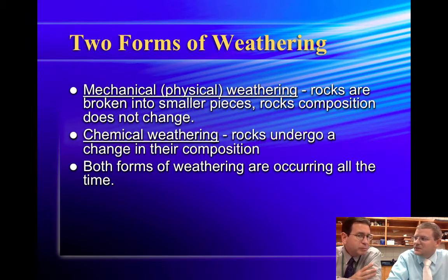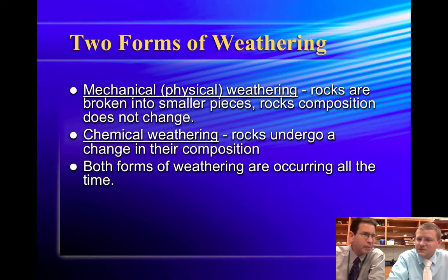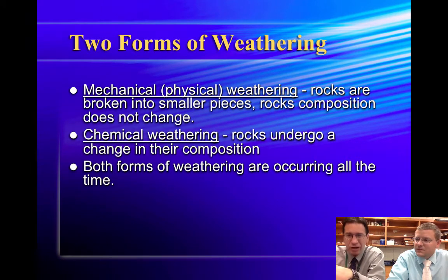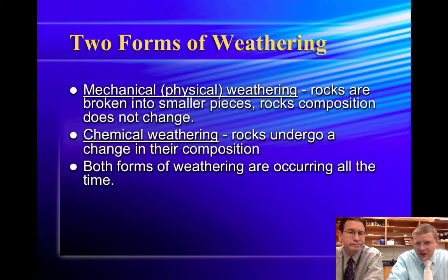You still get larger chunks into smaller chunks with chemical weathering, but this time it's a little more insidious. It's more like getting some chemicals into the rocks, and those chemicals change the composition of the rock, and then the rock breaks down as a result. Both of these are happening pretty much all the time on the surface of the earth. But how can we distinguish if it's been physically or chemically weathered?